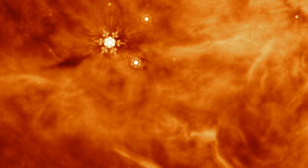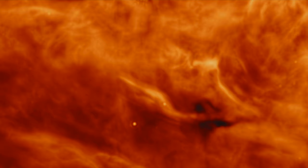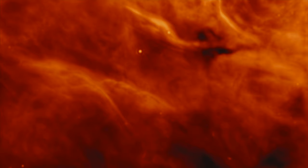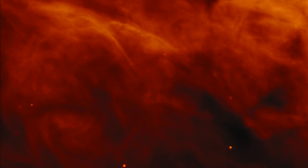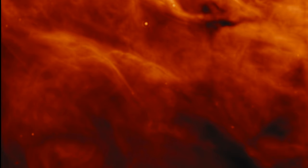But why orange, you might wonder? In the realm of science, colors in images from space aren't just picked because they're pretty. They're assigned to different wavelengths of light to help scientists see what our eyes cannot. In this case, orange helps highlight specific features at this mid-infrared wavelength, offering a window into the complex processes at play around Iras 23385.